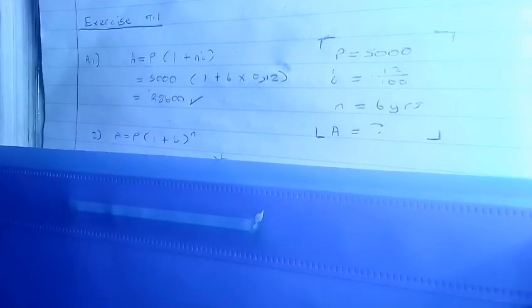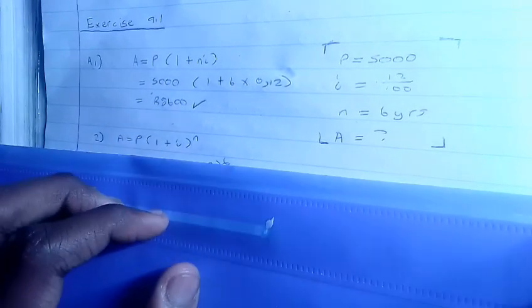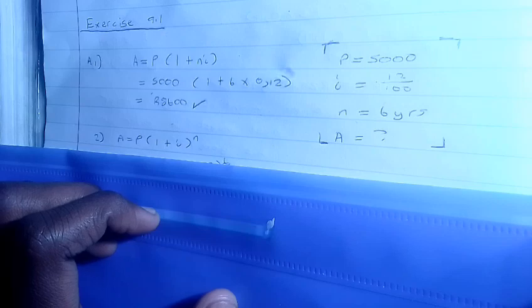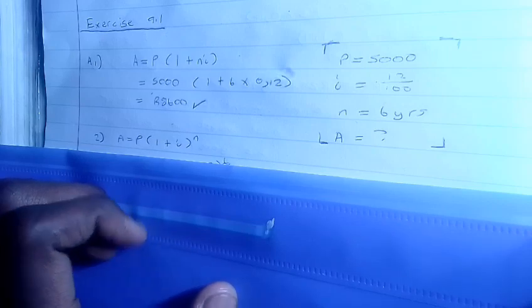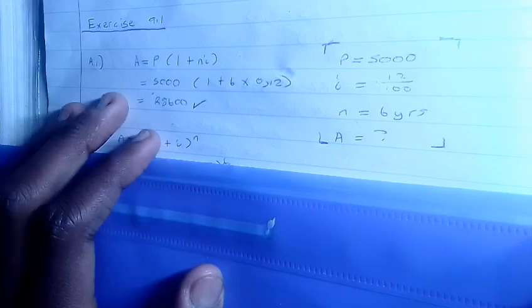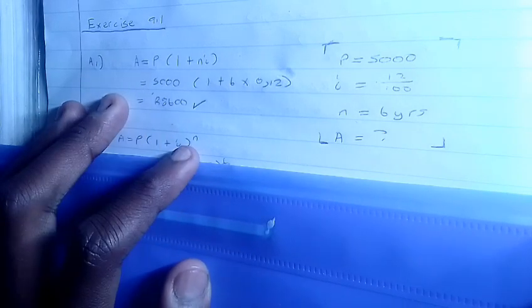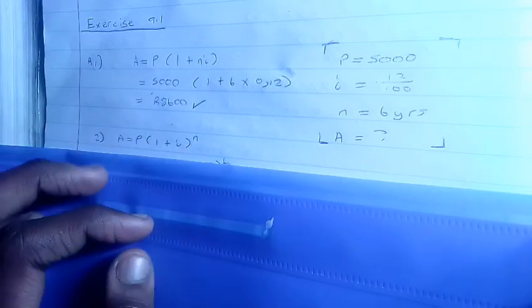Now here we're gonna use the compound formula. This is how the compound formula looks like: A = P(1 + i)^n, where n is the exponent where you put the number of years.